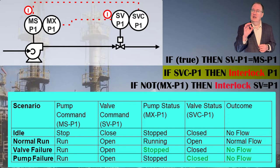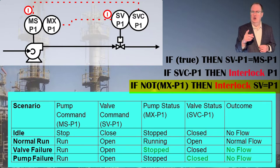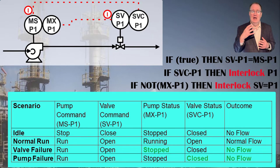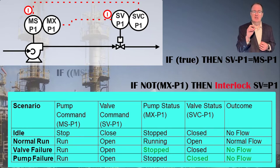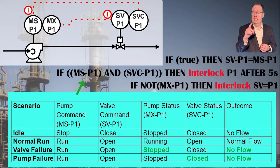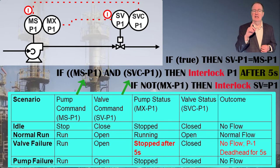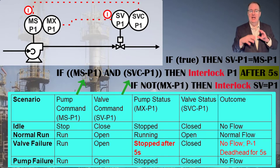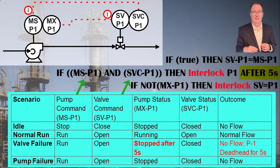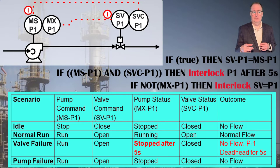If the valve is closed, the interlock means we can't start the pump. If the pump is stopped, the interlock means we can't open the valve. So we can never start this system. How do we solve this? We use the delay mentioned earlier. Let's modify the P1 interlock to say that it only triggers if we're trying to start the pump and the valve is closed, and only after waiting five seconds. This allows us to start the pump even if the valve is closed and run it for five seconds while the valve has a chance to open. Only if the valve fails to open after five seconds do we interlock the pump. Locking parts of the plant up with interlocks is surprisingly easy and a common startup problem — try to watch out for this when writing interlocks.